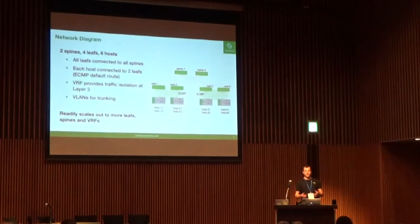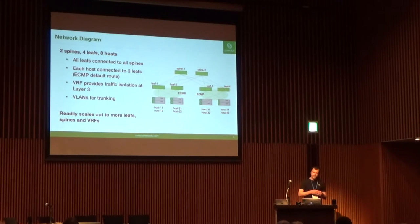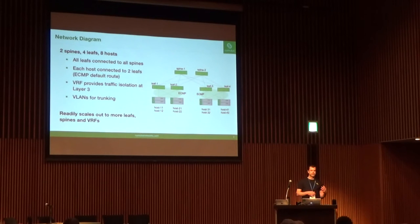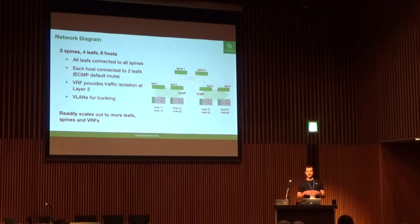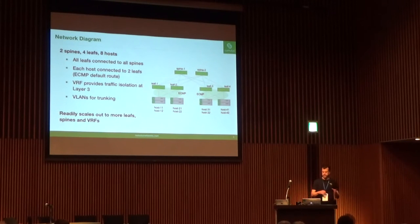The topology in question is a typical Clos topology where you've got two spines, four leafs, and some number of servers connected to those spines and leafs. The host servers are running stock distributions like Ubuntu 16.04, and the intent is to host containers, virtual machines, or some kind of microservices. The hosts are connected to multiple leafs, giving ECMP for a default route so you can better use the bandwidth of the network. Because VRF is in Linux proper, the same implementation exists in the spine, the leaf, and the servers — so the same configuration can be used on all of those to set up traffic isolation.